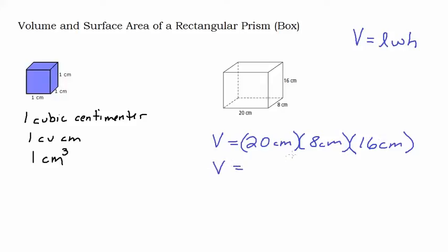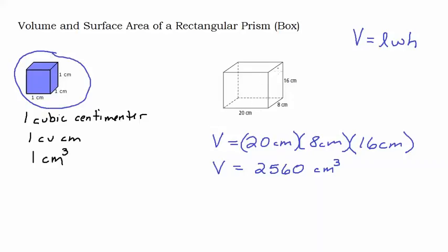You simply multiply 20 times 8 times 16. We get 2,560 cubic centimeters. Make sure you label correctly — saying the volume is just centimeters doesn't make any sense. You need to think about how you're measuring things when you're doing volumes. What it's saying is I would need 2,560 of these little cubes if I wanted to build this 20 centimeters by 8 centimeters by 16 centimeters box.